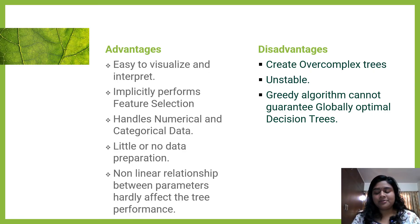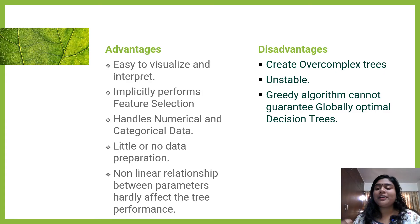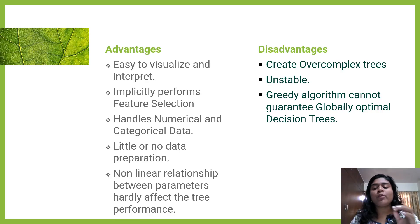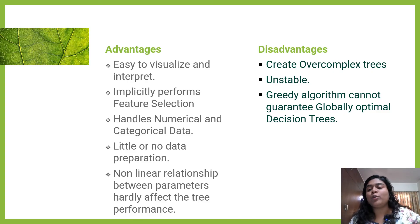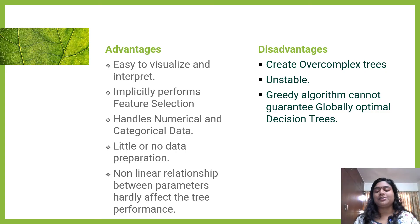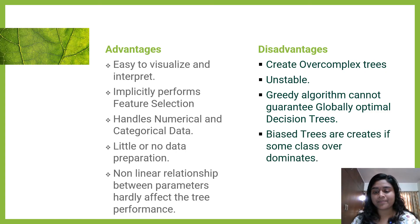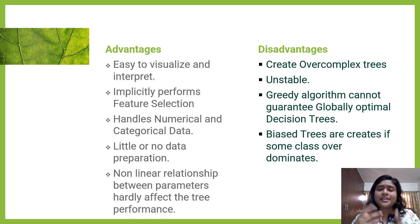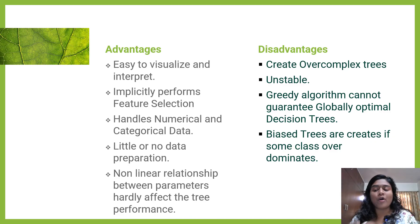The greedy algorithm, which always chooses the best split using the Gini, cannot guarantee that you will reach a globally optimal decision tree. In all our models we want to reach the global minimum, but here we are not always reaching the globally optimal tree. Additionally, biased trees are created if some class over-dominates — for example, if there are more males than females, results would be biased in favor of males.